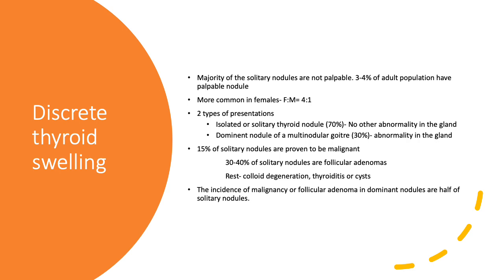Seventy percent of discrete thyroid swellings are solitary nodules and thirty percent are dominant nodules. The majority — about 85 percent — of solitary nodules are benign, with a 15 percent chance of malignancy. The incidence of malignancy in a dominant nodule of a multinodular goiter is half that of solitary nodules.